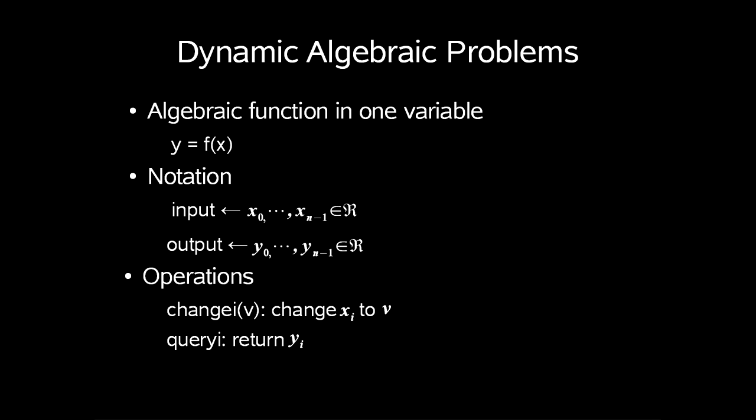Our output is described in a similar way, with y0 up to yn-1. What we want is to support these operations: change, which changes xi to v, and query, which returns yi.